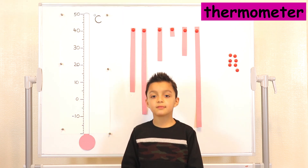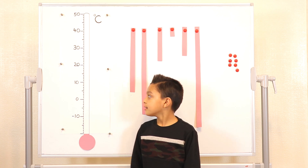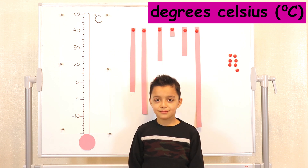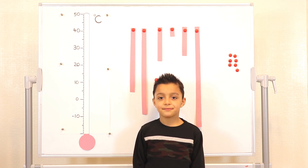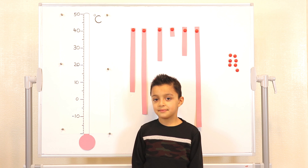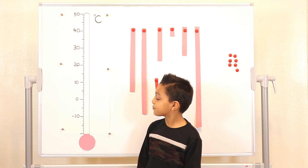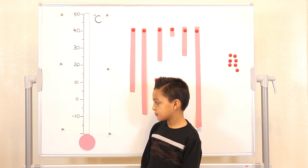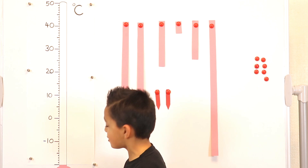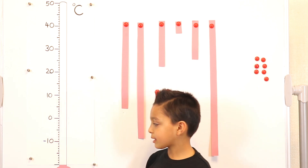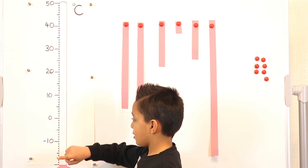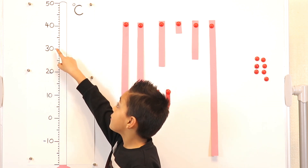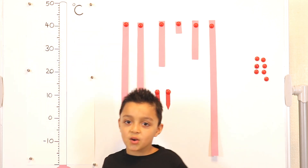A thermometer. And what unit are we going to be measuring temperature in today? Degrees Celsius. So we're going to start off looking at that thermometer. You've learned to read scales recently. Can you explain what's going on with the numbers on your thermometer? This is going up in tens. Can you start from zero and show us counting up in tens? Zero, ten, twenty, thirty, forty, fifty degrees Celsius.